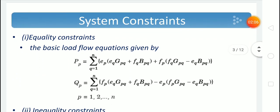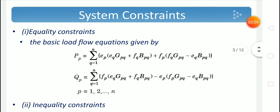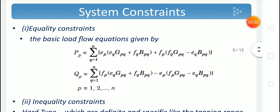Before finding the solution of these problems, we have to consider some system constraints or limitations. We cannot simply assign any value of power to a particular generator, because there are limitations for active power, reactive power, voltage, and thermal limits — temperature should not increase to a high value. So before assigning a particular value of power, some constraints have to be considered. These limitations are called system constraints.